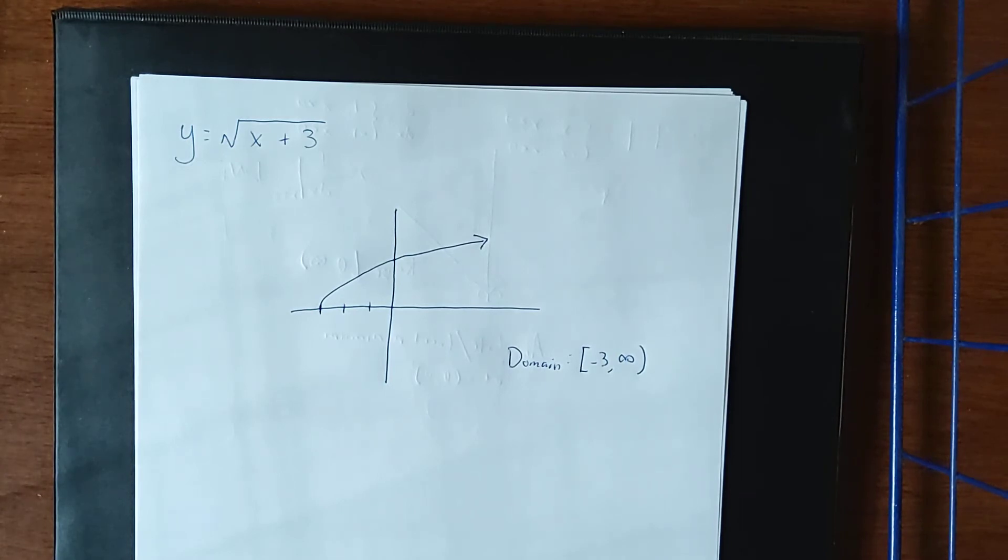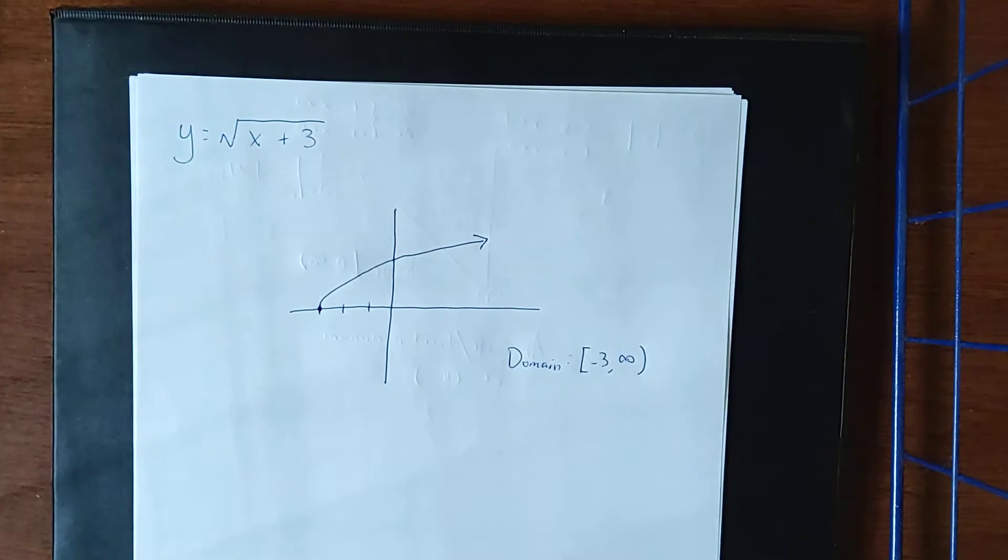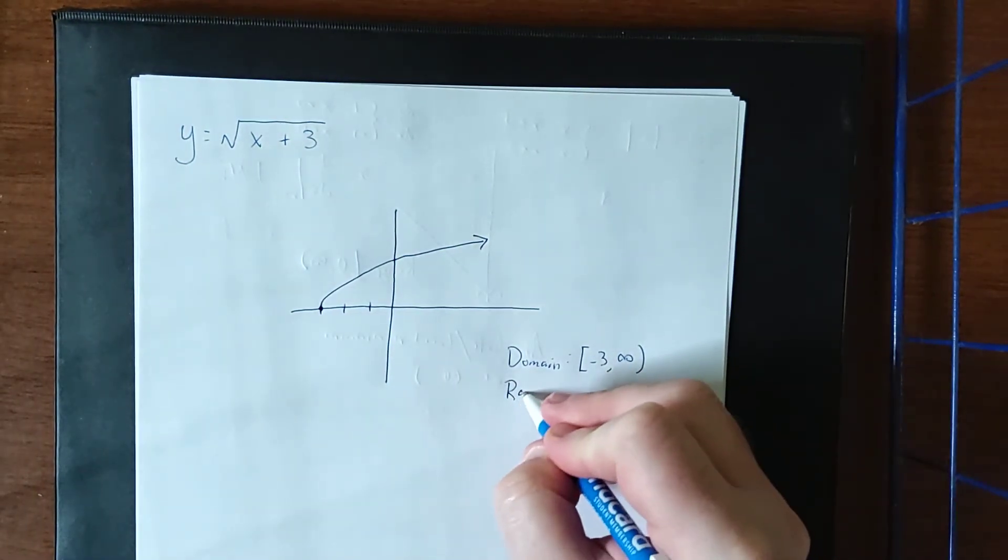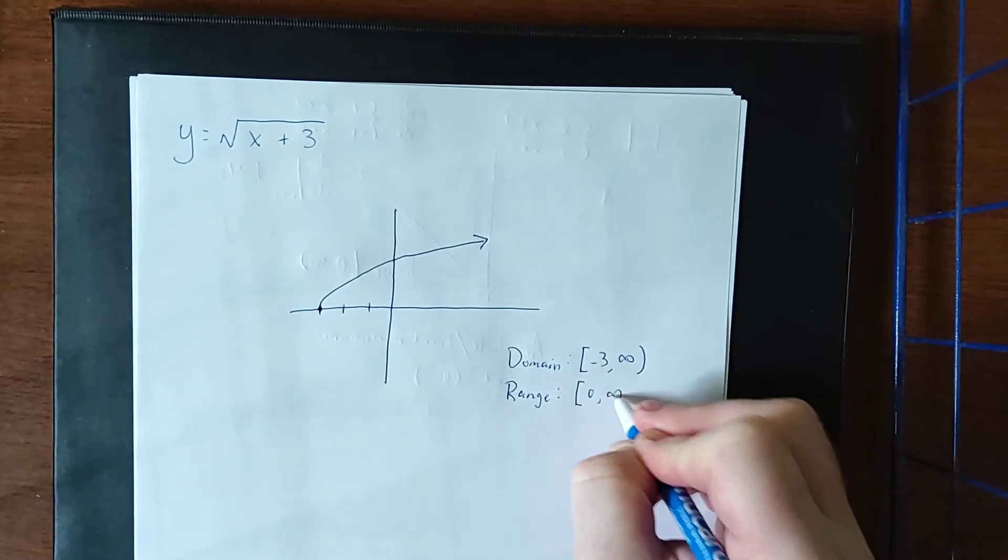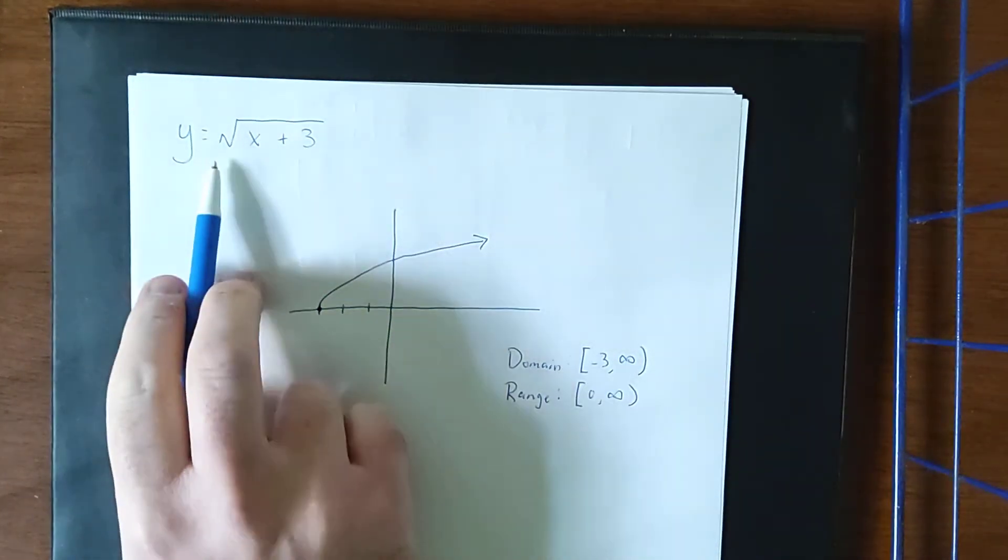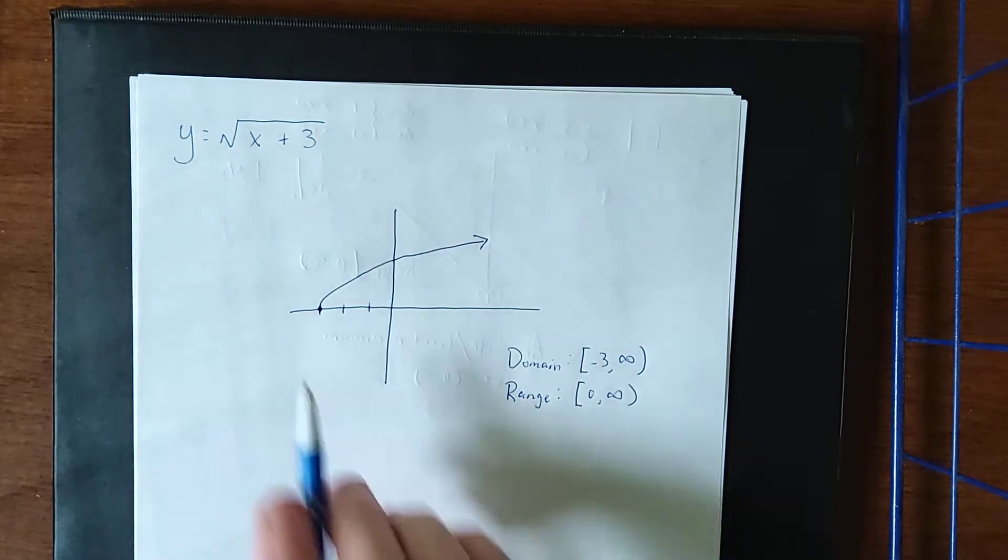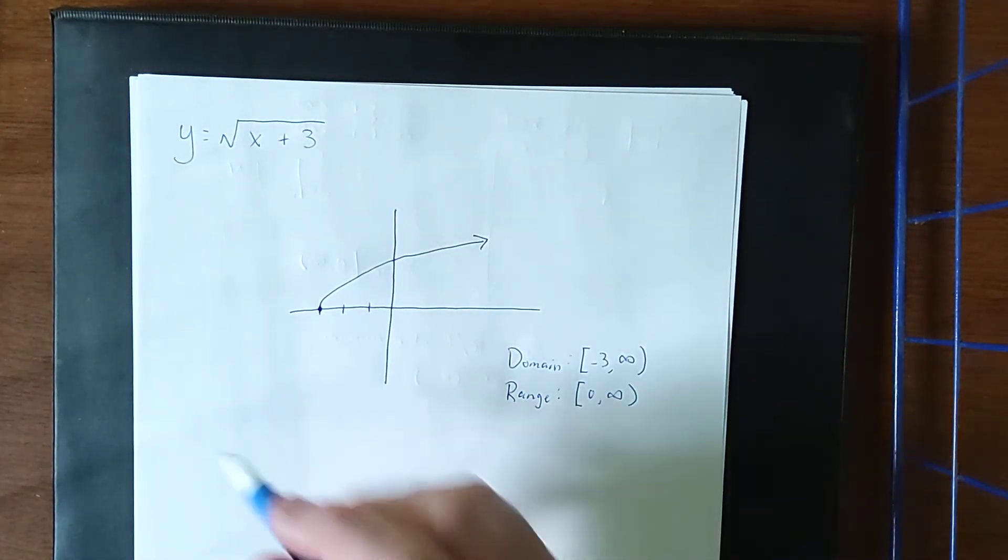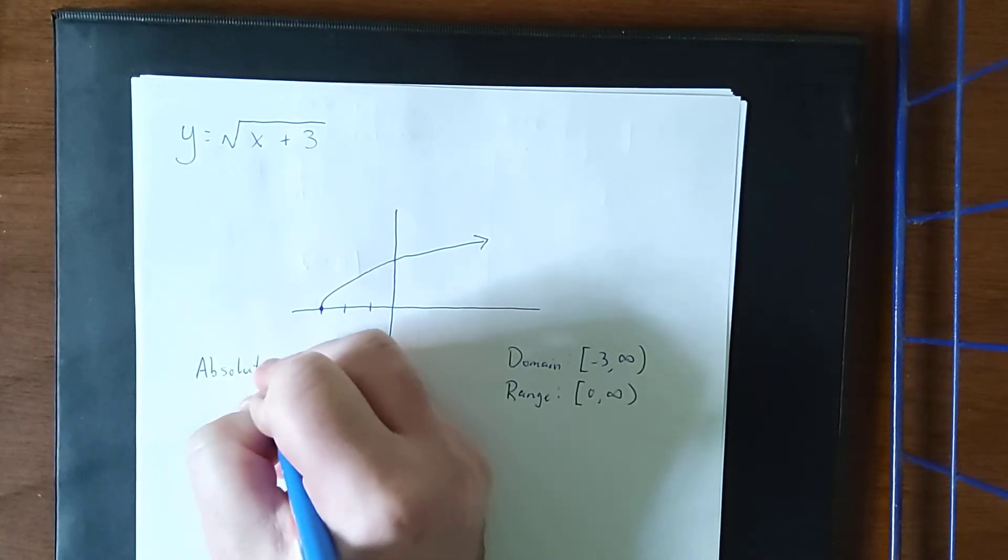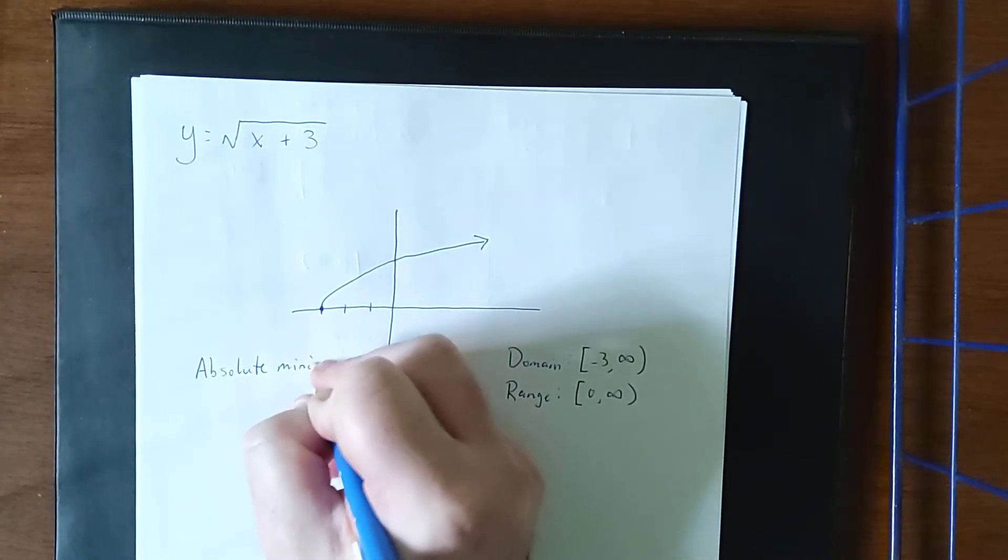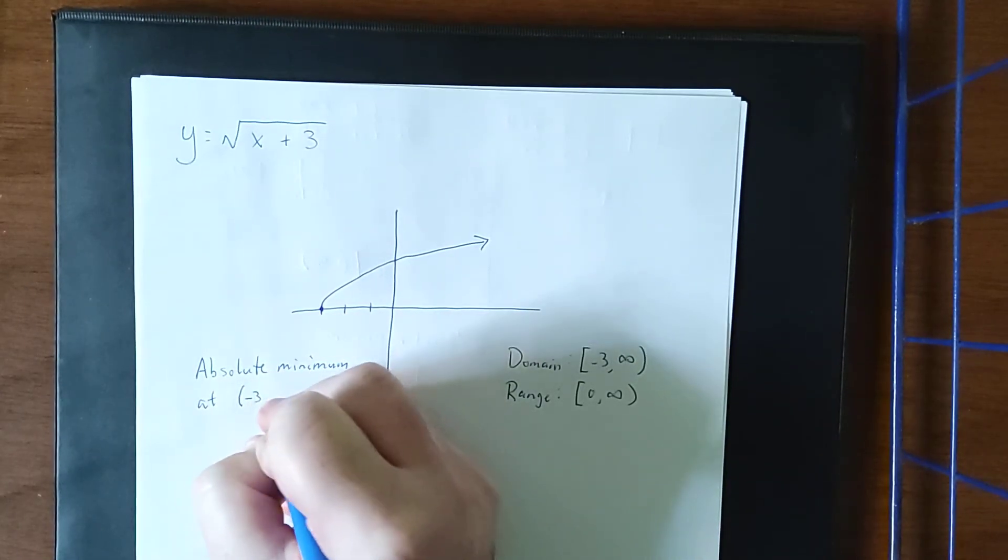Now, with that in mind, I do see that the graph does have a lowest point, right here, at (-3, 0). It should be pointed out that the range of this function is going to be from 0 to infinity, due to the fact that we are only dealing with the primary square root, not the negative square root. So what this does for us is it establishes that we have an absolute minimum at the ordered pair (-3, 0).